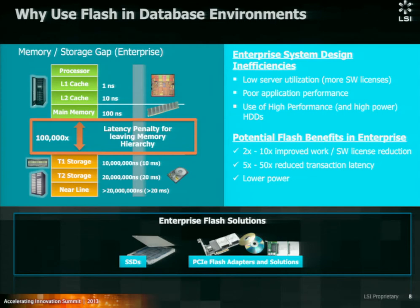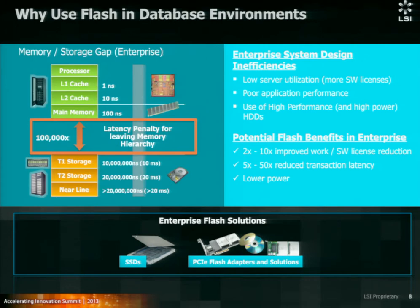So what are some of the current design inefficiencies? If a server has a lot of memory, you have a lot of CPUs to support that memory, which require a lot more software licenses. Also, you might have hundreds of spinning hard disks to support your high level of IOPS or megabytes per second. Some of the Flash benefits are big performance gains with the same amount of CPUs and possibly a reduction of CPUs. We've also seen up to 50x performance gains or reduced read latencies by going to a PCIe Flash device, which also requires low power consumption.